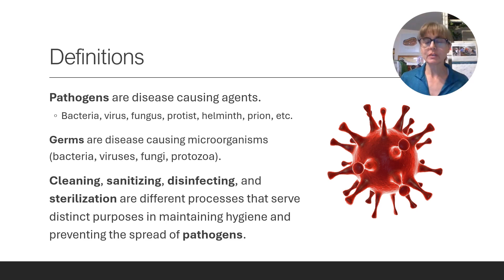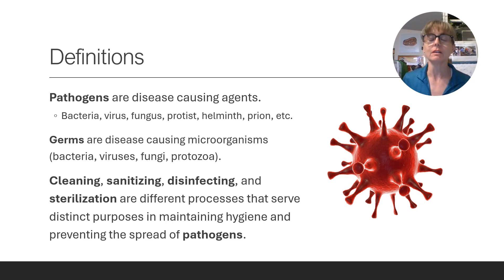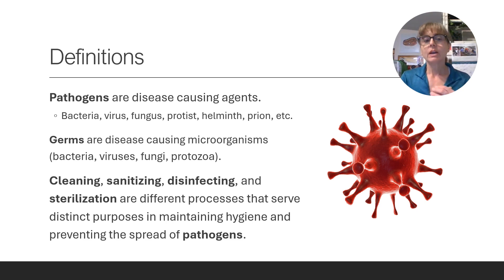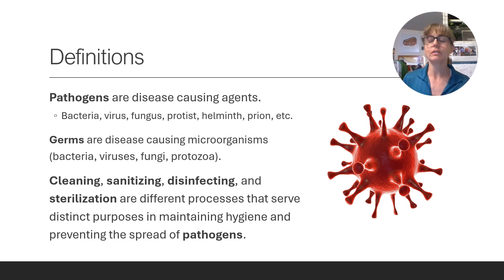Let's start out with some common terms that you're going to see as we talk about what cleaners and disinfectants are. First, we're going to talk about what pathogens are — pathogens are disease-causing agents. It could be anything that living things come into contact with that can cause disease, and that can include bacteria, a virus, a fungus, a protist, which is a little tiny single-celled organism, a helminth, which are types of worms, or prions, which are abnormally folded proteins. Germs are disease-causing microorganisms, and those are typically bacteria, viruses, fungi, and protozoa. Cleaning, sanitizing, disinfecting, and sterilization are all different processes that serve distinct purposes in maintaining hygiene and preventing the spread of pathogens.